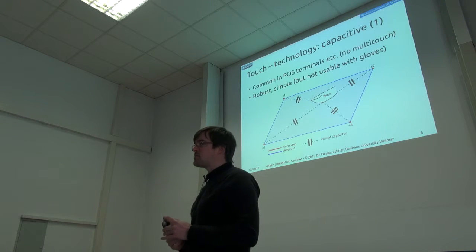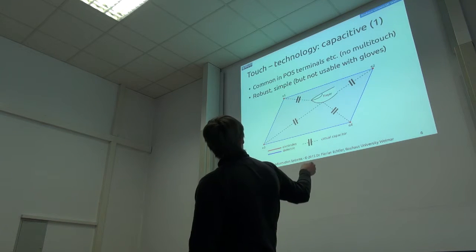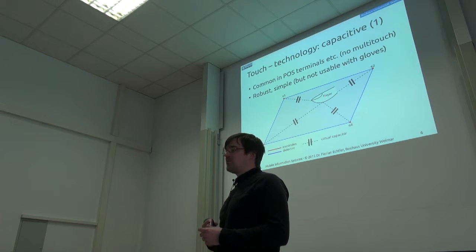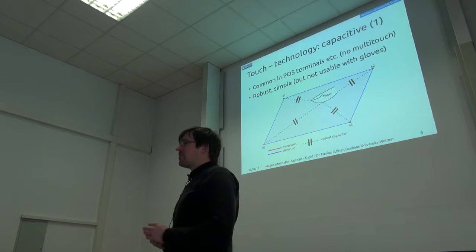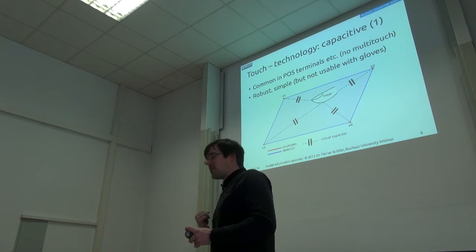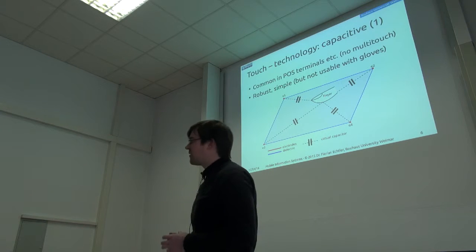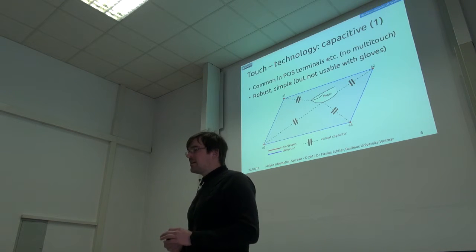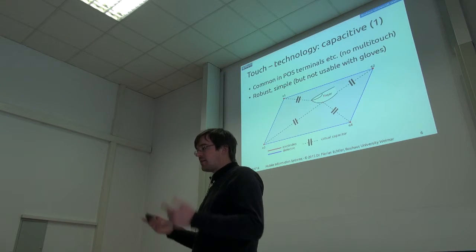By now, you can actually sometimes buy gloves which have conductive fingertips. So, you can use the capacitive touchscreens, too. But here, you usually need an electrical contact. And you have different electrodes. And they measure the capacitance. And from that, you can calculate the position of the finger. This is also still a precursor to what we use today. But this can be built very robustly. So, for example, if you have a ticket vending machine at the subway station or at the train station, then they usually use some kind of technology like this because you can actually build it on armored glass. So, you can hit it with a hammer and it doesn't do anything. It's not usually multi-touch capable, but still used quite widely in vending machines, for example.